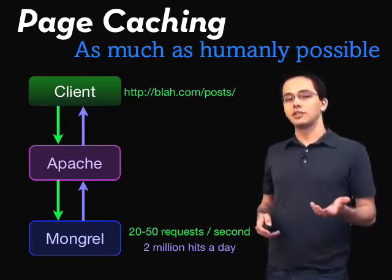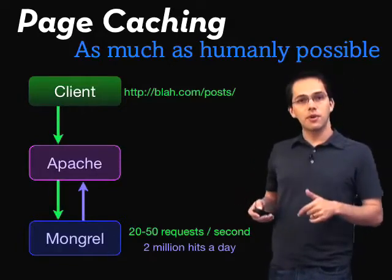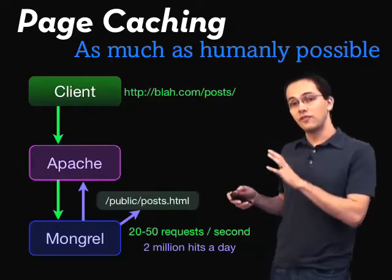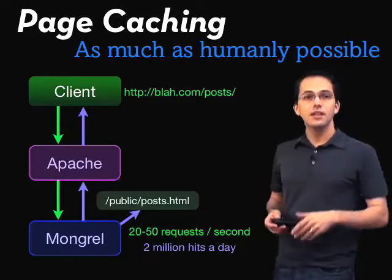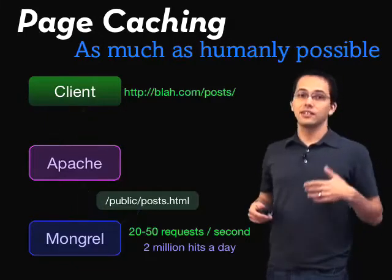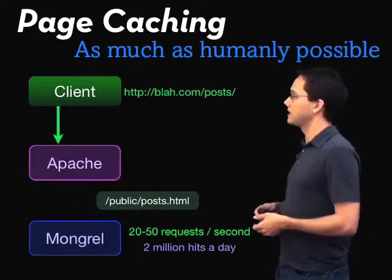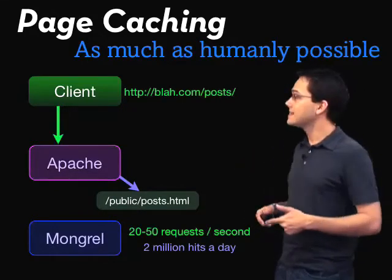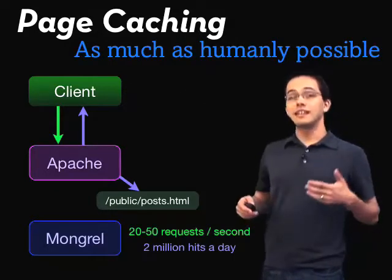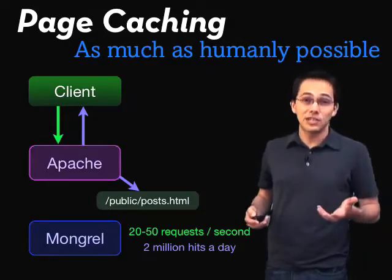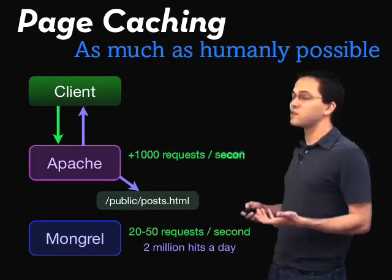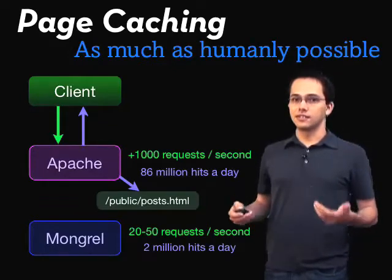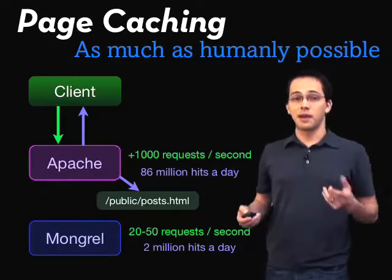Now, if you have page caching turned on, what's going to happen is a request is going to come in, go to the mongrel, the page will be generated, sent back to Apache, but it's also going to be stored on the local file system in a location like so. The next time somebody requests that same page, Apache is actually going to load that directly from what it finds on the file system and send that back to the client. In this way, you can get a much higher throughput, because Apache can handle up to around 1,000 requests per second, which amounts to about 86 million hits a day — very good. That's a lot of traffic just from one Apache instance.